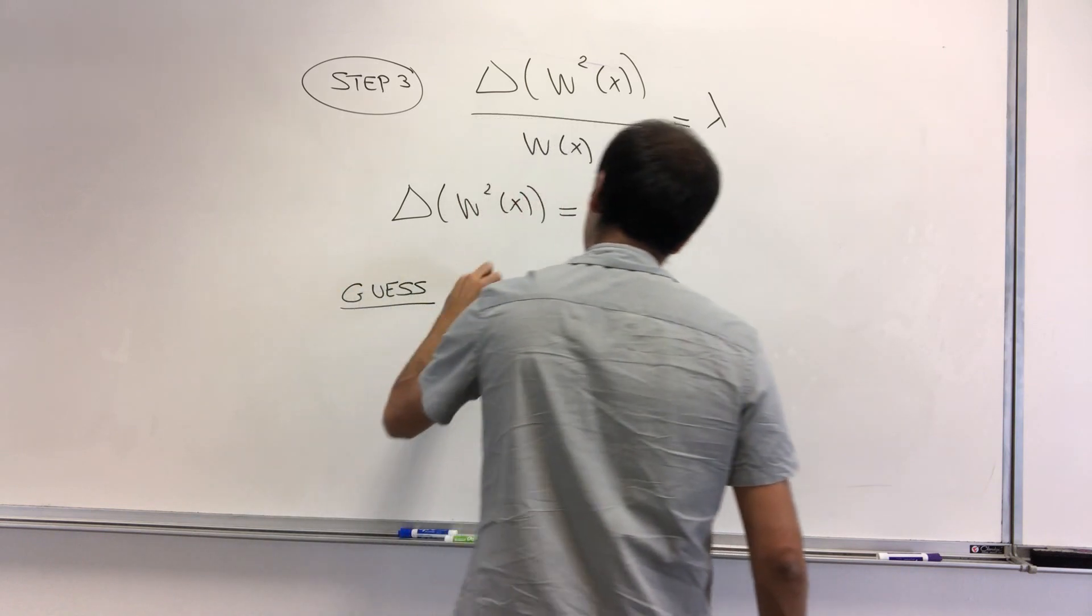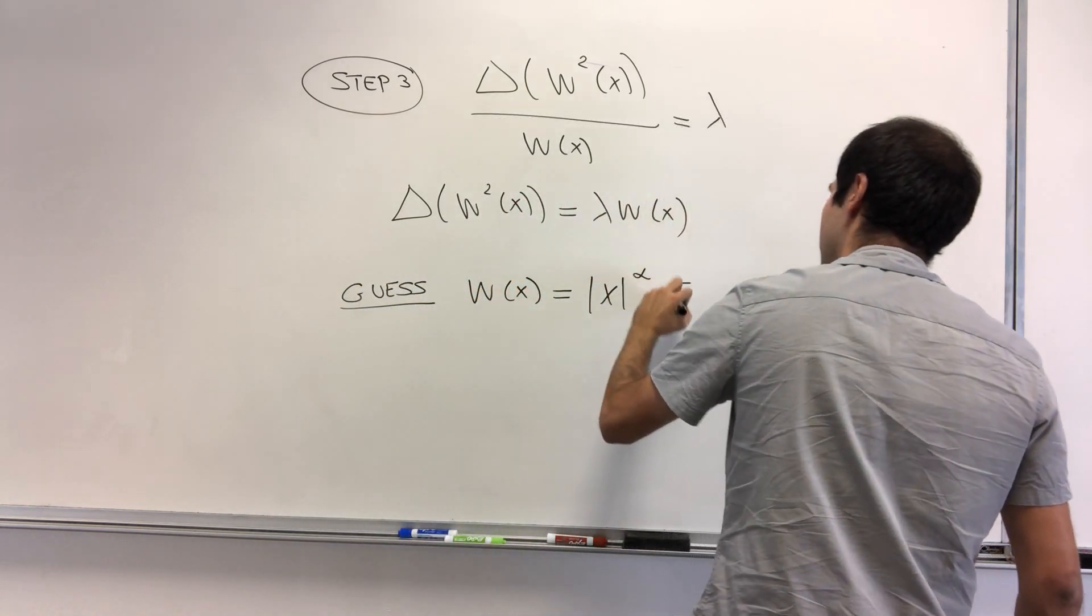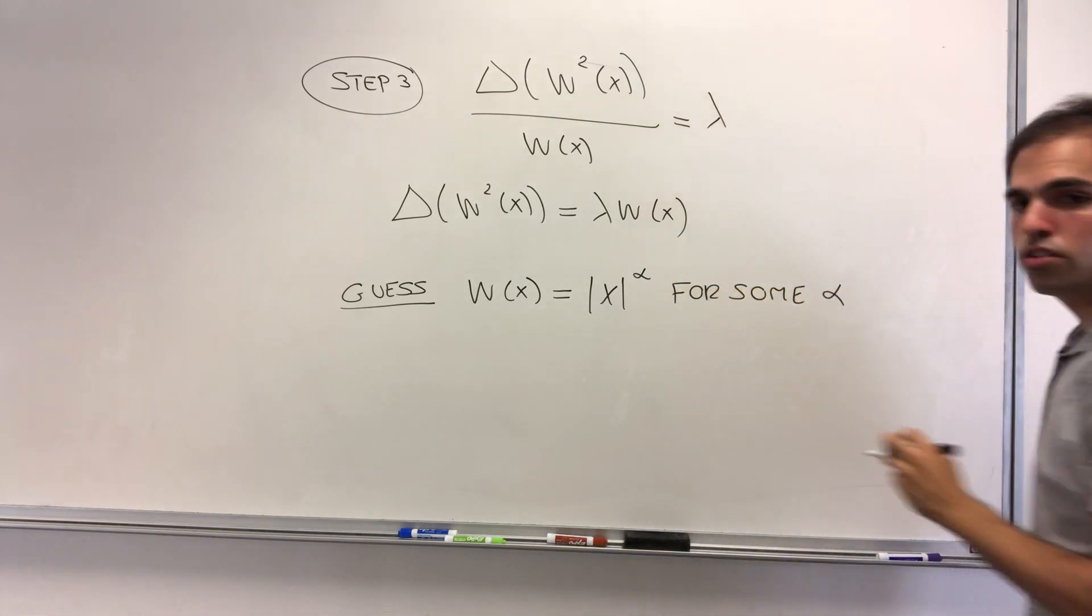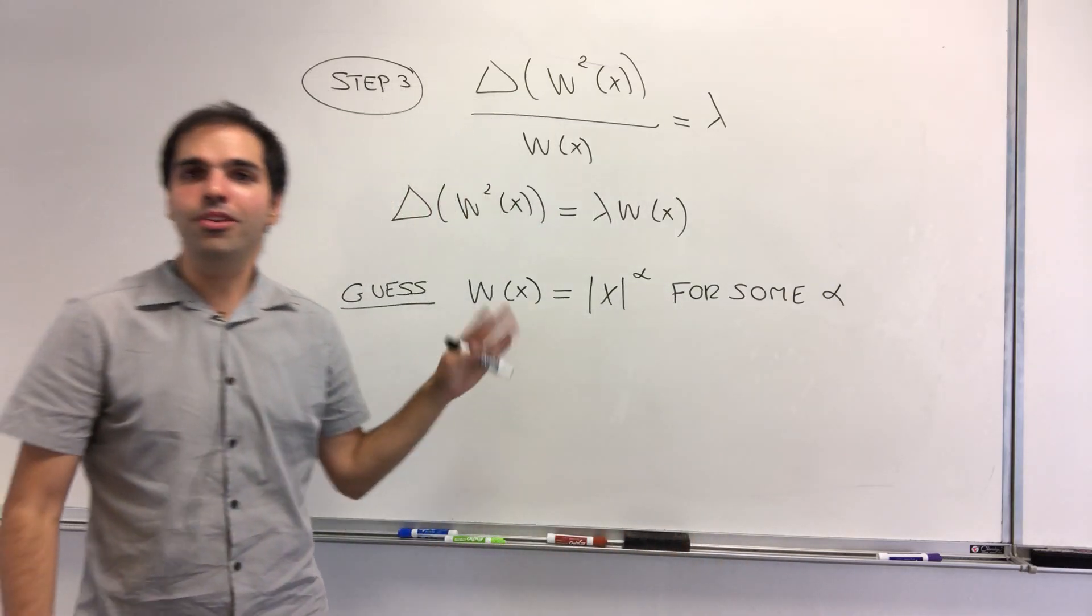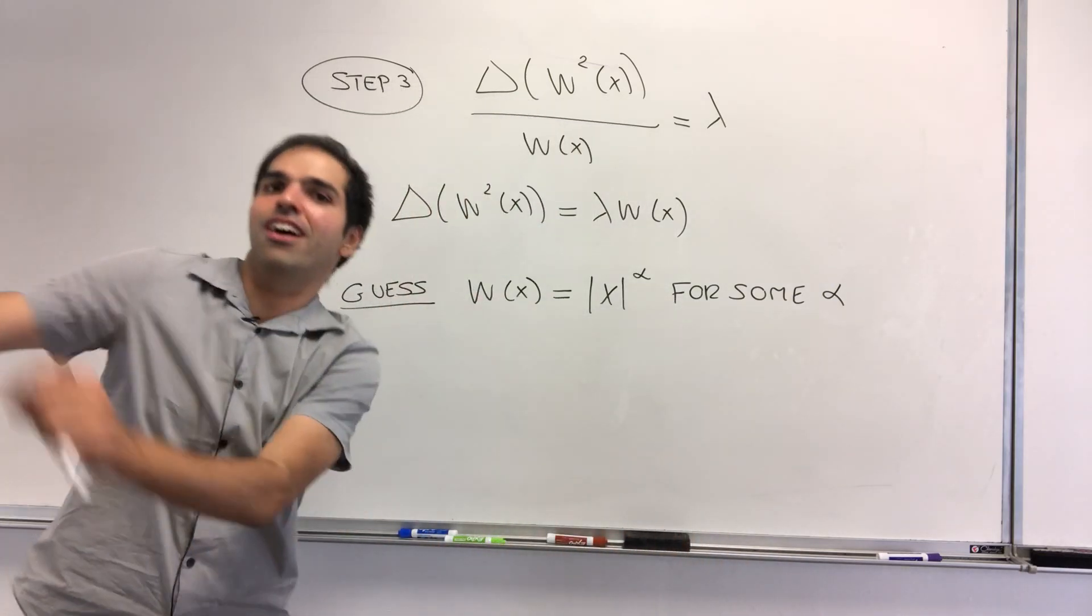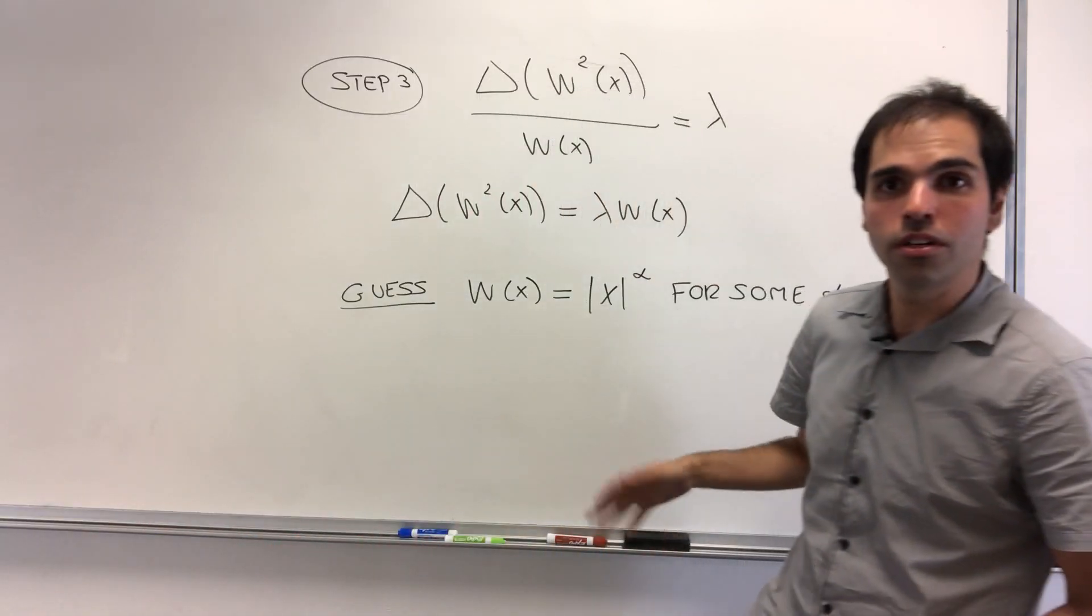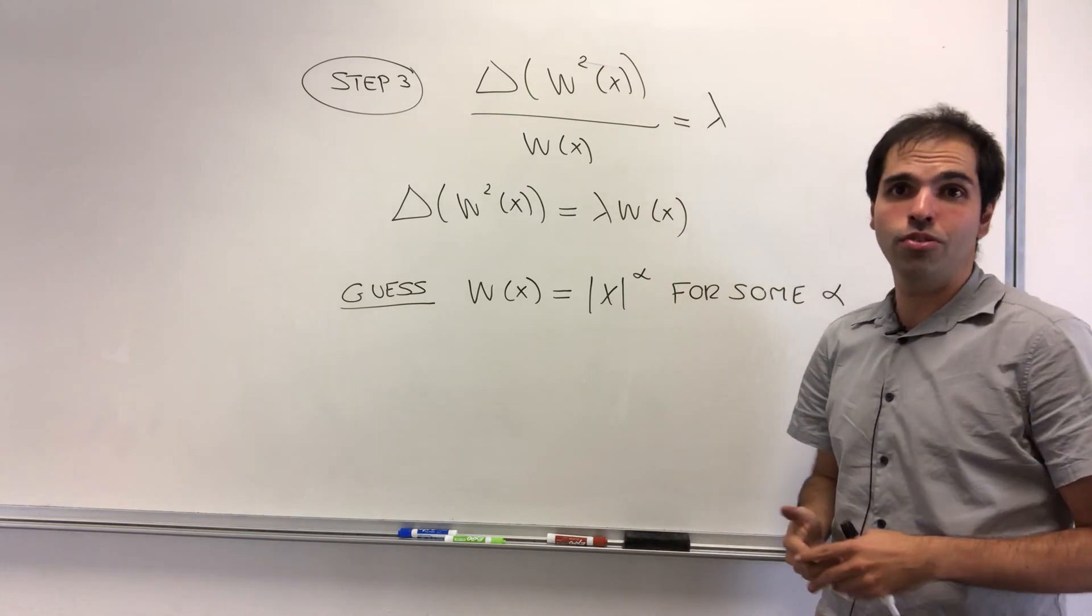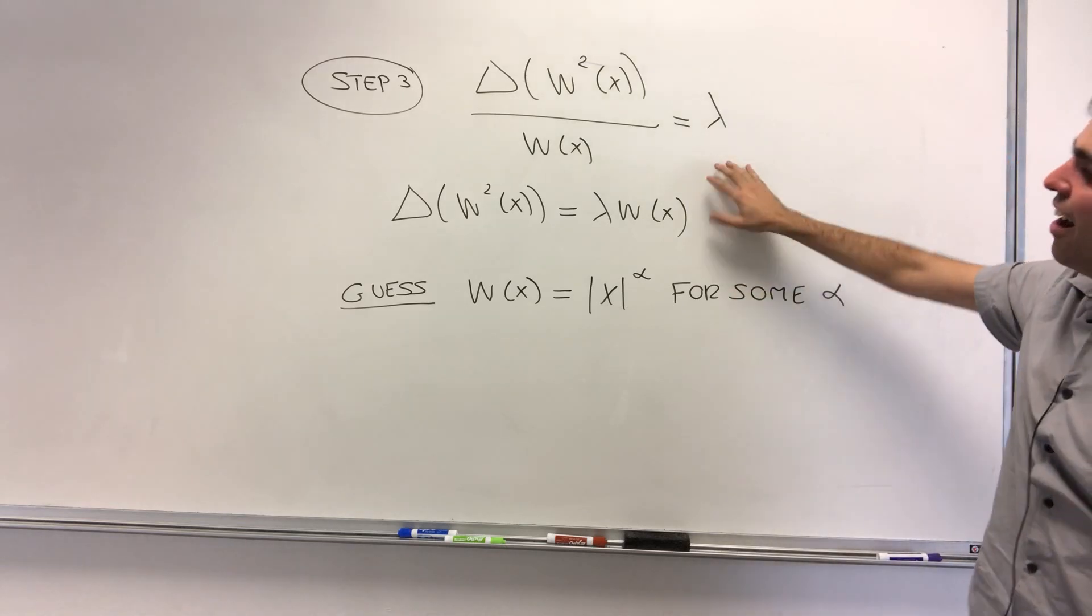Let's guess w of x equals x to the alpha for some alpha to be determined. By the way, I know it's not like calculus where you find a solution here, you do have to guess. And that's, again, because PDEs are hard, so it's hard to find solutions. Maybe in 200 years there's a more systematic way of doing this.